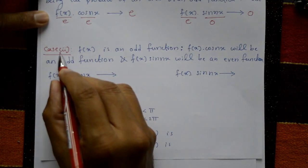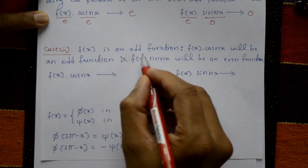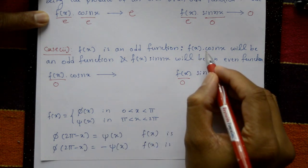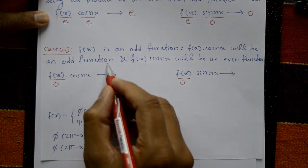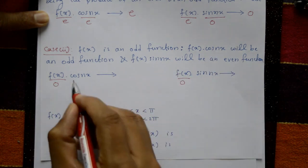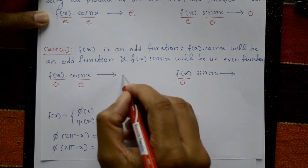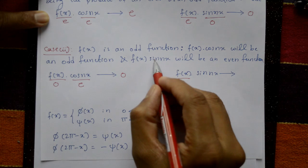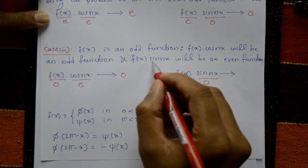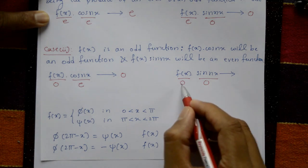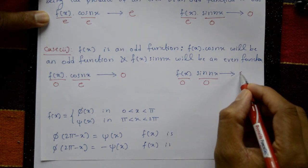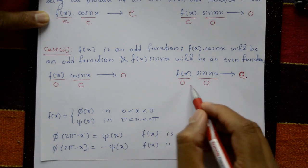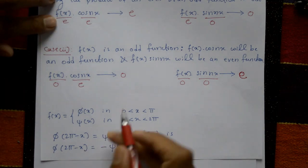Case two: f(x) is an odd function. Then f(x)·cos(nx) will be an odd function, since odd times even gives odd. And f(x)·sin(nx) — the product of two odd functions — is an even function.